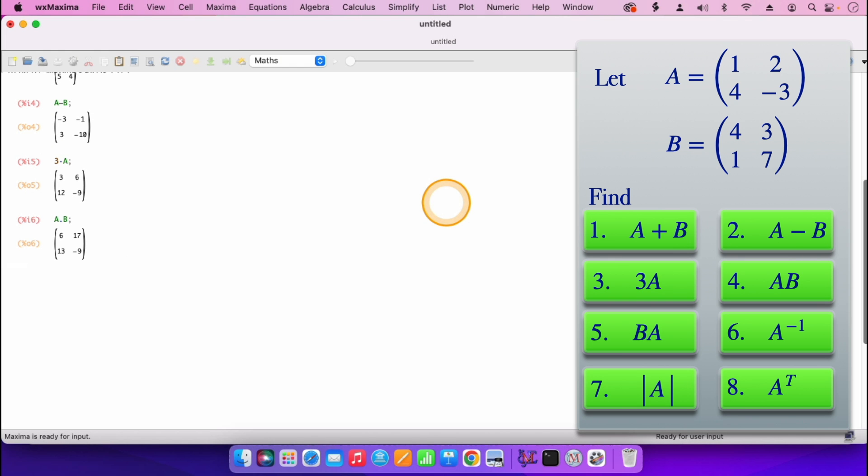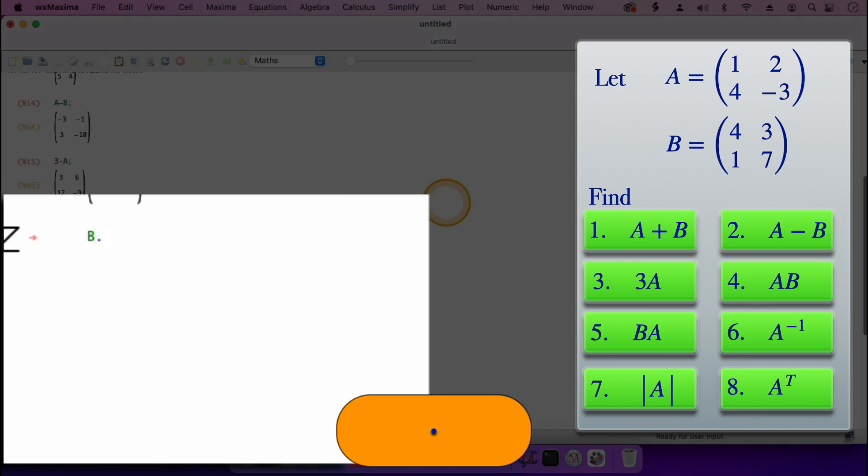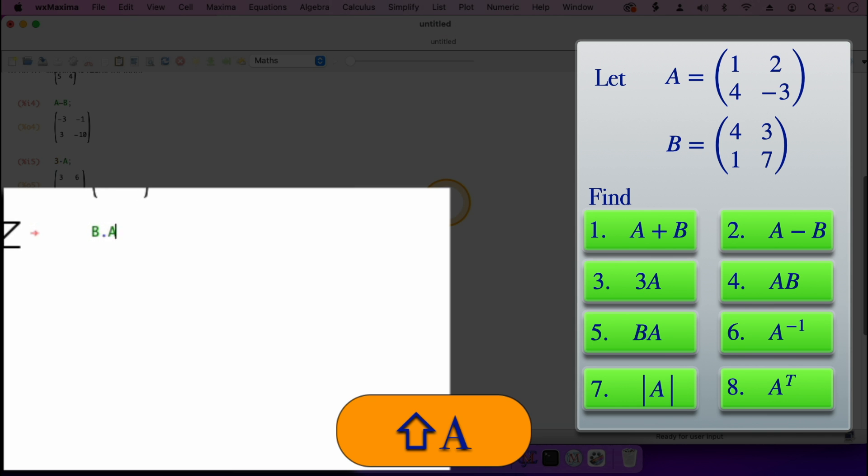For question number five, we are having B times A. So B, then the dot, the full stop, then A. Then shift enter, and the result gives us 16 minus 1, 29 minus 19.